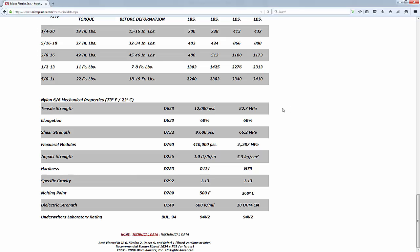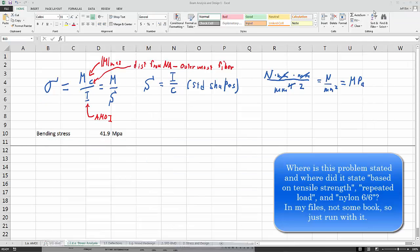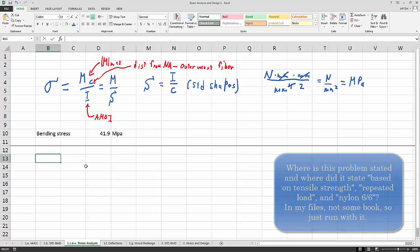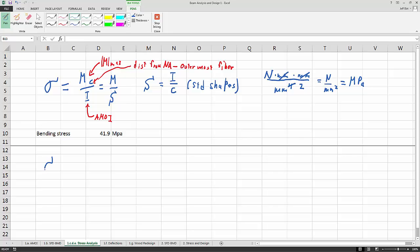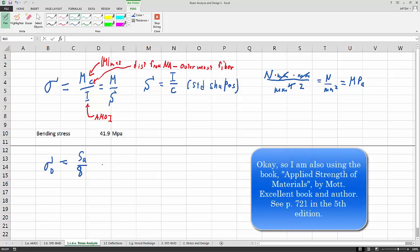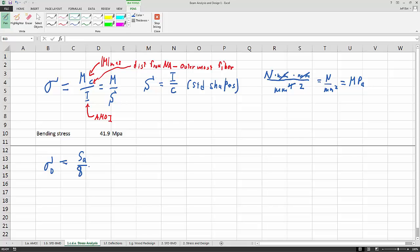So we will use this value, 82.7 megapascals, because the problem says based on tensile strength. And it's a repeated load, so we need to reduce our expectations by a factor of 2. So our design stress is ultimate strength divided by 8. That's based on our formulas for design stress in the Mott Applied Strength and Materials book. It's probably a good rule of thumb for starters, but this is plastics, so some strange things can happen with plastics, but we'll keep to this for now.